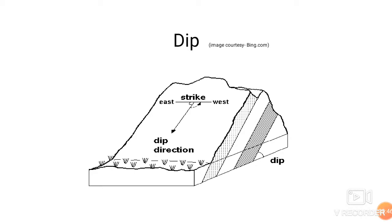This is the diagrammatic representation of dip. Here we can see that strike and dip are perpendicular to each other. The dip perpendicular to strike is 90 degrees — this is called true dip. At the side of the diagram, another dip angle is shown which is lesser than 90 degrees — this is called apparent dip.